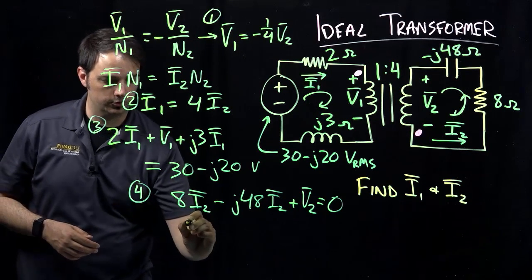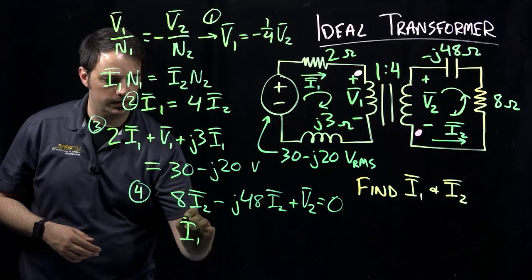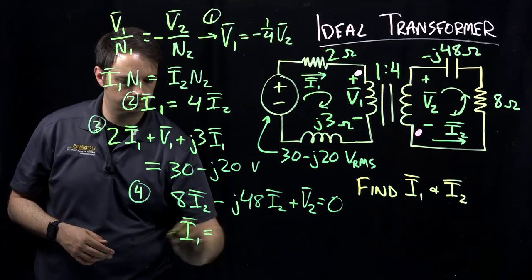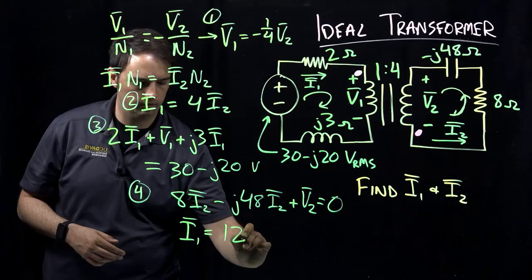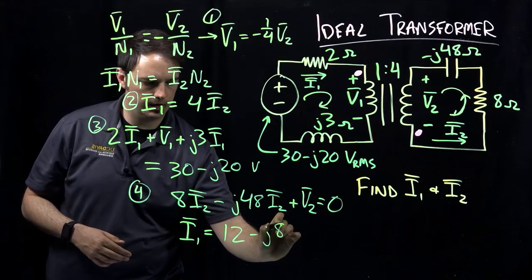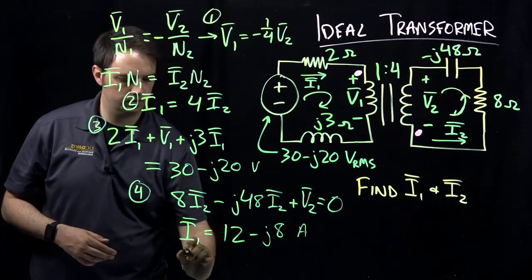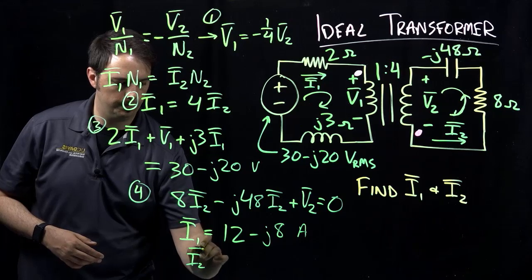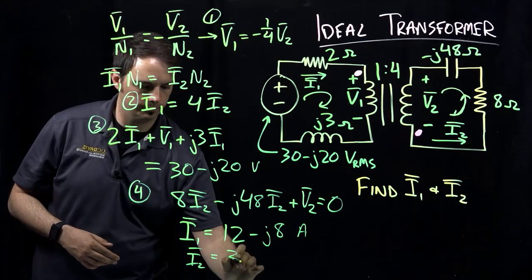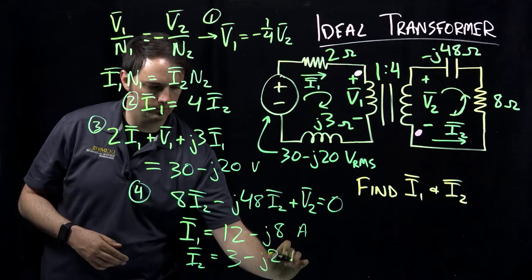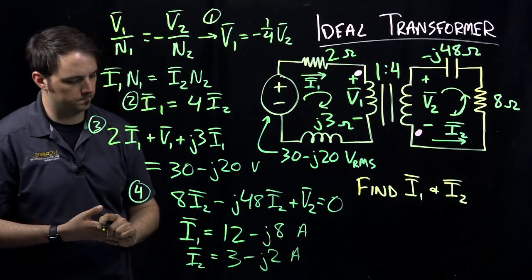Ultimately, what we should get to, or what you hopefully will get to in the end is a value of I1 equal to 12 minus J8 amperes, and I2 equal to 3 minus J2 amperes.